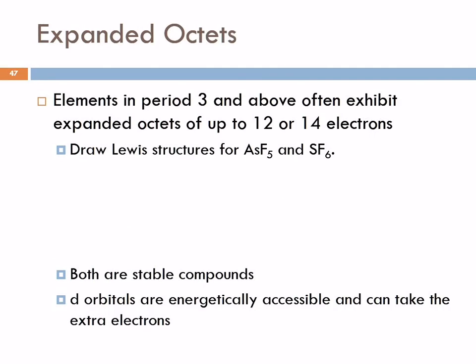So we had smaller than octet, and we can also have larger — these are called expanded octets. This can happen for elements in period three and above. The nonmetals in period three would be silicon, phosphorus, sulfur, chlorine, argon, and larger. Period two elements never do expanded octets — they physically cannot. What makes the expanded octet possible is that we can utilize the d orbitals. Second period elements have no 2d orbital, so they can't do this.